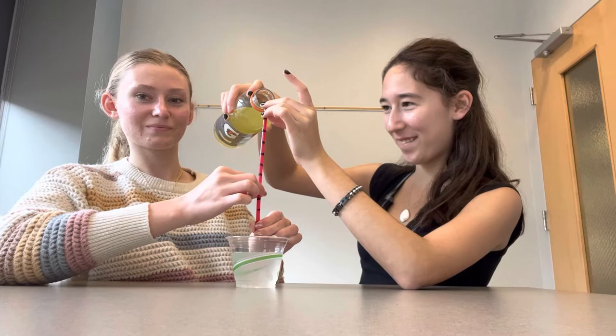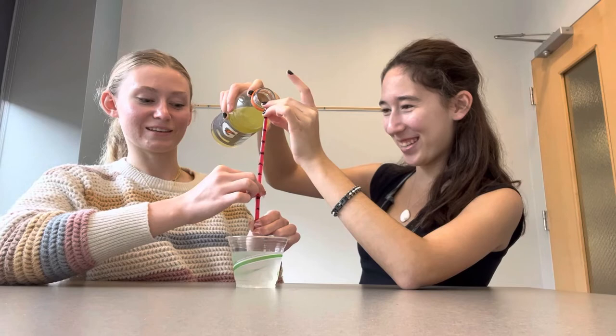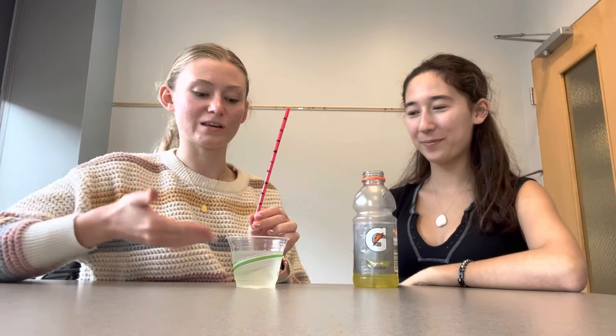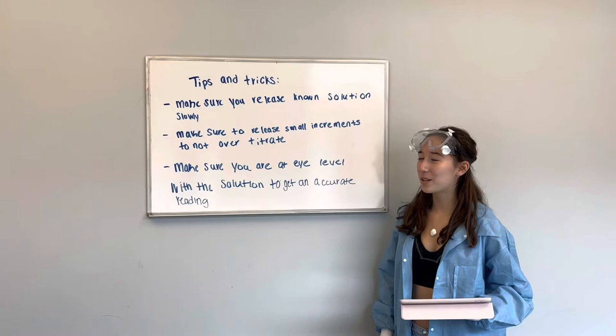I have it closed off at the bottom so then we can release milliliters at a time. Make sure that you have it very secure. And now we're going to release two milliliters. You see the light green color right there? This is a titrated solution. Now we can solve for what type of solution was in our cup to begin with.